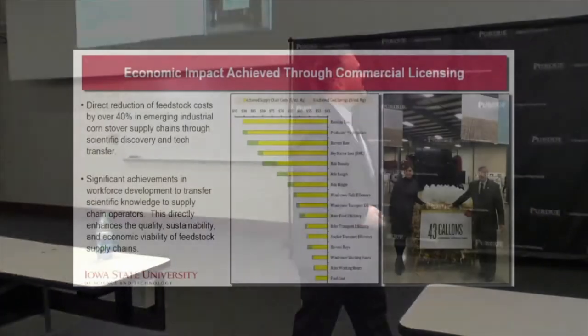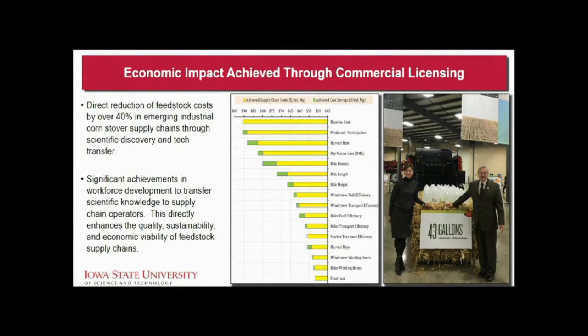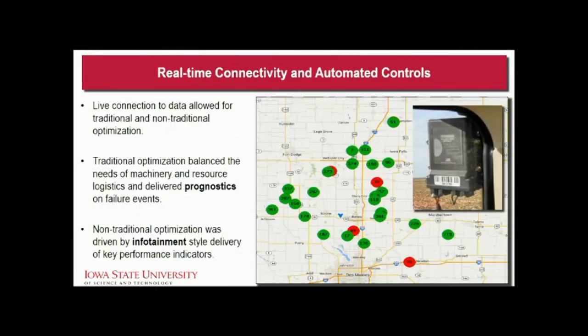The economic impact: we took 40% of the cost directly out of the supply chain. The best story is, there were about 10 different crews — small, farmer-owned businesses. Seven were local Iowa businesses; three had come from across the country as technical experts. The one with the longest experience wanted nothing to do with the data system — they didn't need it, they had experience. But we could take a fresh Iowa group of mostly Iowa State students and a few farmers, and within a week they could outpace a company with 30 years of experience just by using data. That's the kind of change we're talking about.